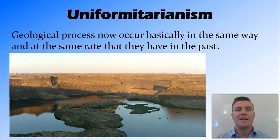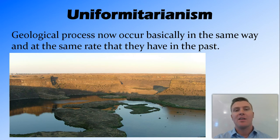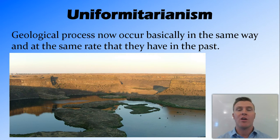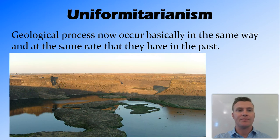The first rule is uniformitarianism, which states that the geological processes occurring now are pretty much the same as they've been in the past. Therefore we can make assumptions from knowing current geological processes about geological processes that happened in the past. Without this rule we'd have no idea what was happening in the past, so this is the rule that all of the other rules hinge on.